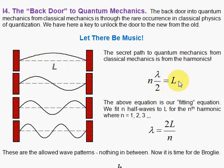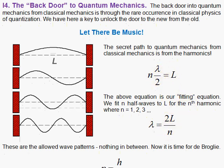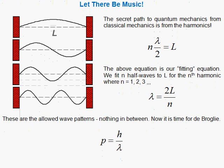So n half waves fitted to L quantizes the wavelength as λ = 2L over n. And that in turn quantizes the momentum using de Broglie's relation.